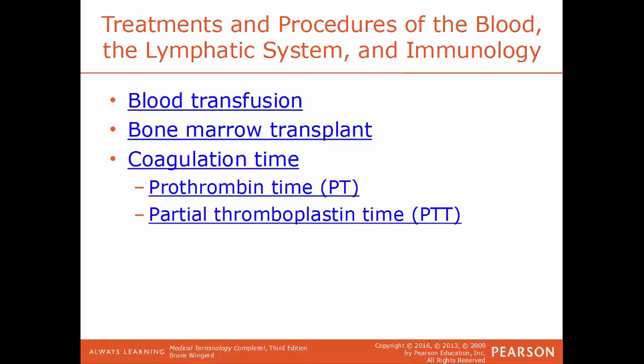A blood transfusion is the process of transferring blood from one person to another. Bone marrow transplant involves transplanting bone marrow from one person to another. Coagulation time tests gauge how long it takes for the body to form a clot and stop bleeding — for someone with hemophilia, this time is much longer. Examples include PT (prothrombin time) and PTT (partial thromboplastin time), both measuring how quickly blood clots in response to injury.